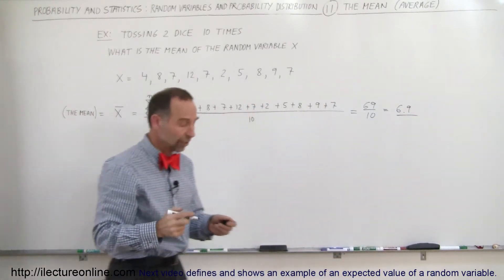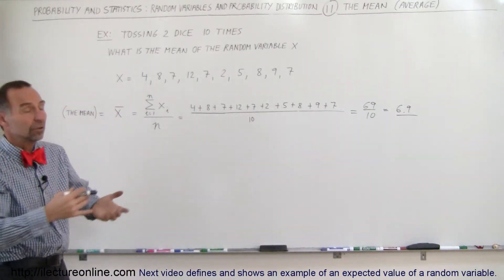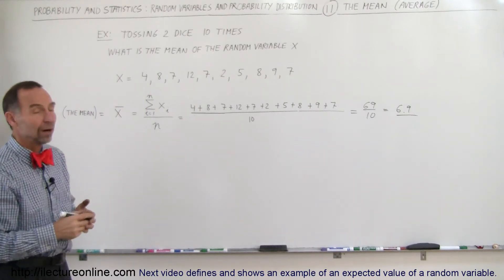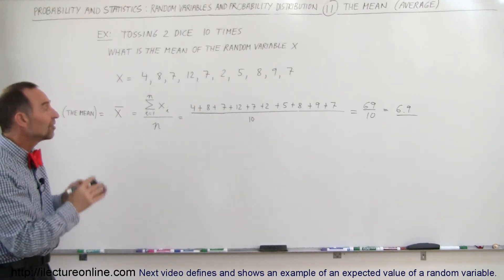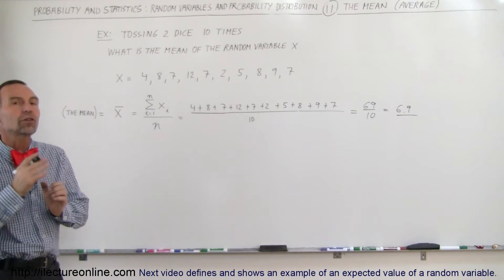The average value doesn't have to be an integer. It could be any number out to any number of decimal places required, but in this case, 6.9 is the average value of all the tosses.